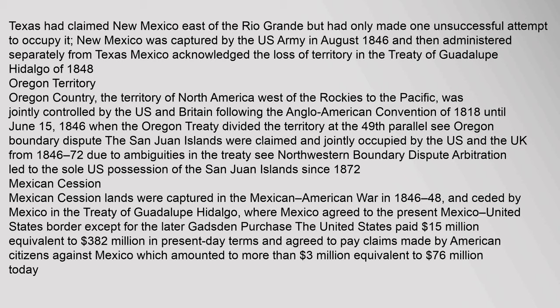Oregon Territory: Oregon Country, the territory of North America west of the Rockies to the Pacific, was jointly controlled by the U.S. and Britain following the Anglo-American Convention of 1818 until June 15, 1846, when the Oregon Treaty divided the territory at the 49th parallel. The San Juan Islands were claimed and jointly occupied by the U.S. and the U.K. from 1846 to 1872 due to ambiguities in the treaty; arbitration led to sole U.S. possession of the San Juan Islands since 1872.